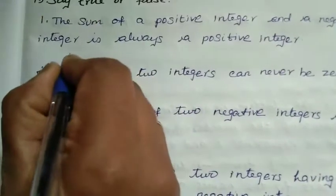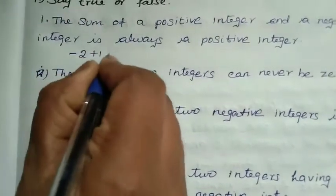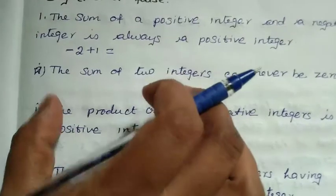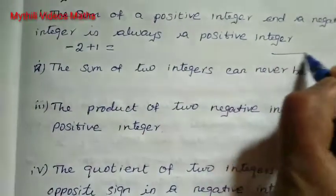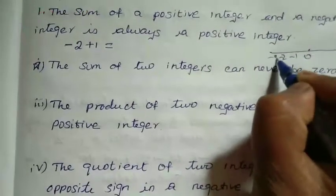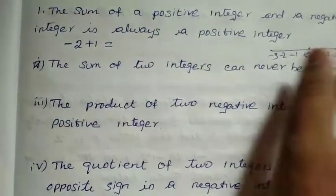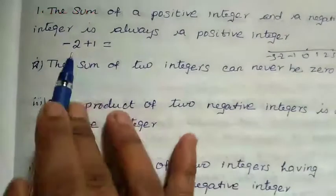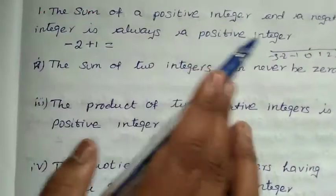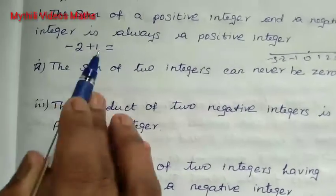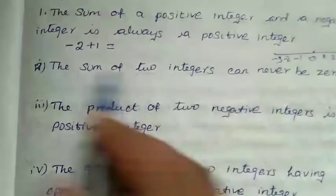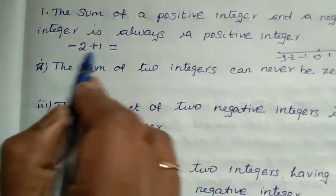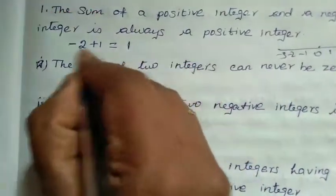Sum means we have to add. Suppose we are taking minus 2 plus 1 — these two are integers. Integers include both positive and negative values and zero. On the number line, the center is 0, left side minus 1, minus 2, minus 3, and right side plus 1, 2, 3. So, minus 2 plus 1 — both have different symbols, so we subtract and take the bigger number's symbol, giving minus 1.